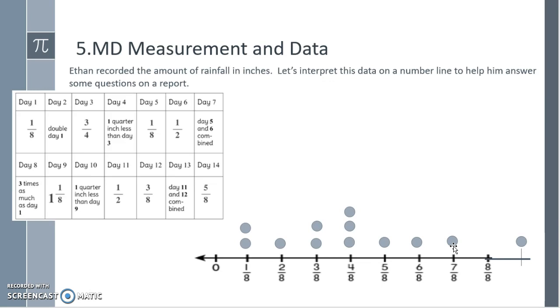We have another at one half, another at three eighths. Day thirteen is day eleven and twelve combined. Again, one half is the same as four eighths plus three eighths is seven eighths, and then day fourteen is five eighths. So we've combined them all together onto a number line chart.